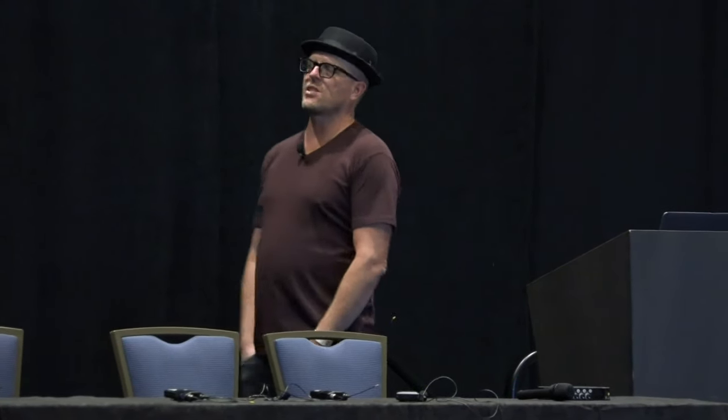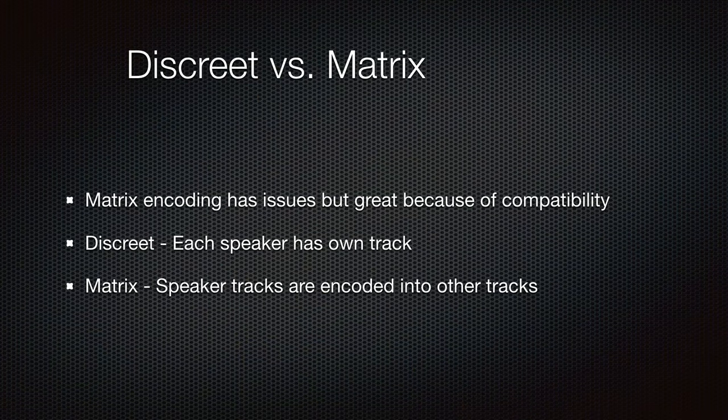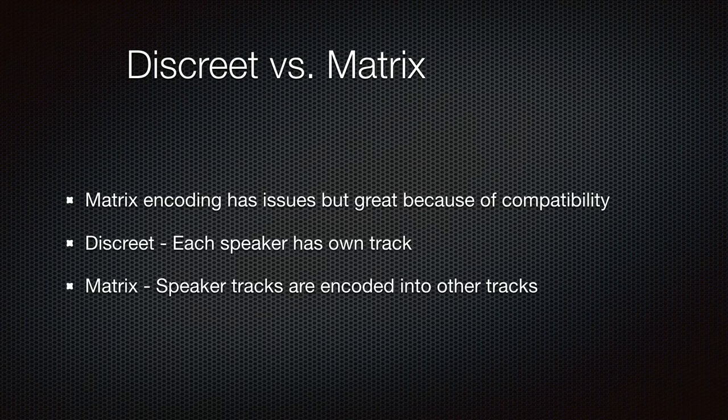It's important to understand the difference between discrete and matrix. Matrix encoding is where you basically hide two tracks in two tracks — you get four tracks out of two. But you're going to get a lot of smearing, a lot of bleed; it's not as good as discrete. Discrete is when you have discrete channels — one channel per speaker. And that's the big move we shift into.